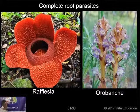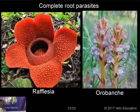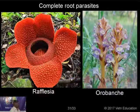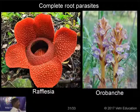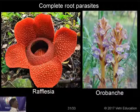Next, complete root parasites. Rafflesia — the biggest and heaviest flower — gets both food and water from the supporting plant and gives only flowers. Another example is Orobanche, which has violet colored flowers, is connected with the root of the host, and is generally a parasite in tobacco plantations. It obtains food material and water completely from the tobacco plant.